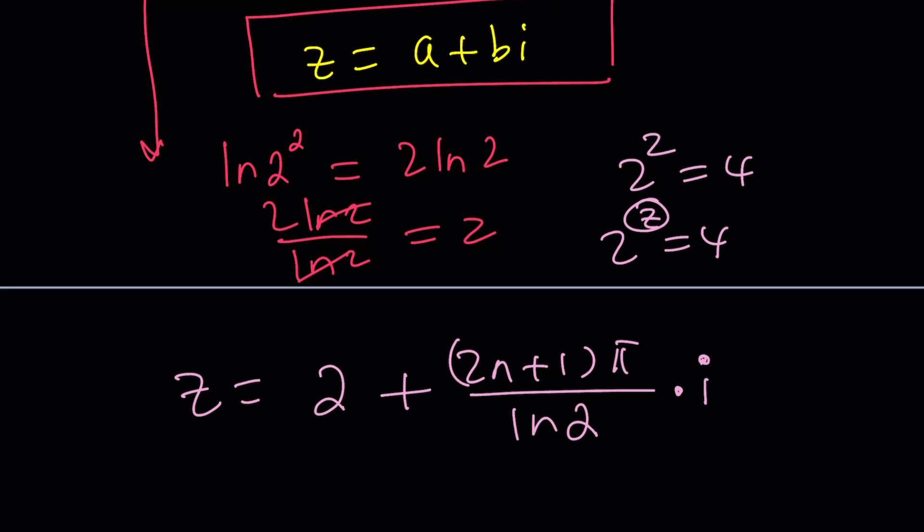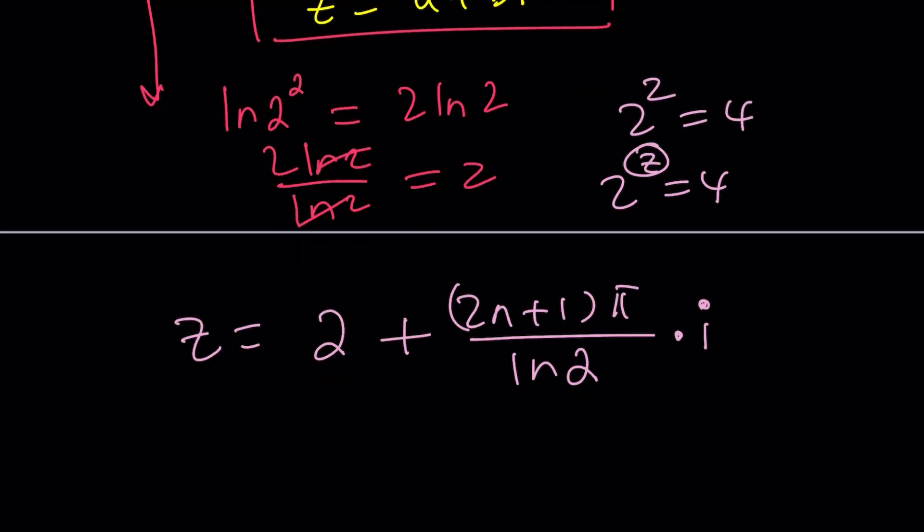Okay let's go ahead and take a look at some special values and then we're going to check with Wolfram Alpha. If n is equal to 0 using the principal value for the argument we're going to get z equals 2 plus pi over ln 2 times i. Okay whatever that value is you find it and that's going to be our complex number.